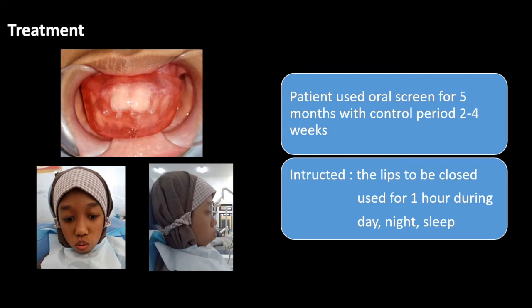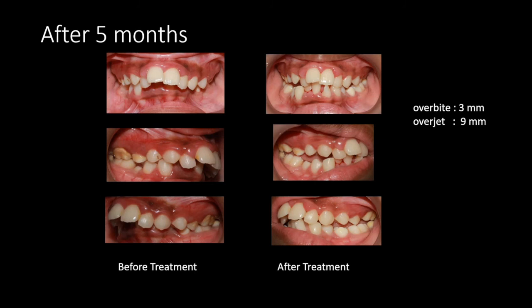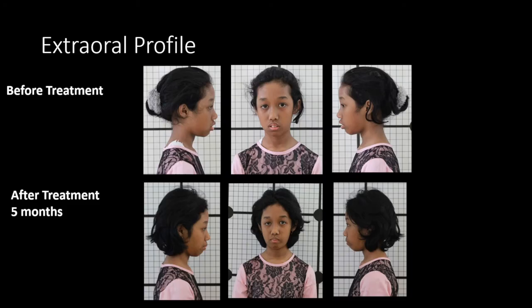The treatment: the patient used an oral screen for 5 months with a control period of 2 to 4 weeks. After each control, the hole was closed gradually. During the use of the appliance, the lips were instructed to be closed, and the appliance should be used for 1 hour during the day, at night, and during sleep. After 5 months of treatment, the lips were able to be closed with overbite 3mm and overjet 9mm. This is the extraoral profile before and after treatment for 5 months using the oral screen.